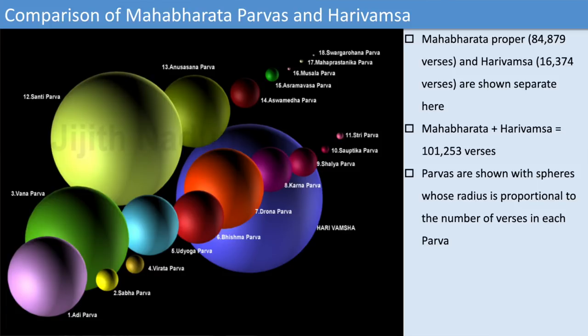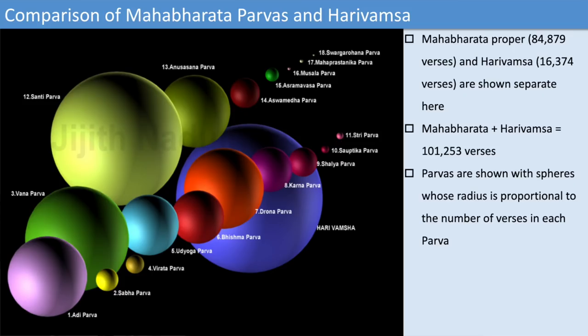This is a comparison of Mahabharata parvas. You can see the Shanti Parva represented as a very big sphere. Some parvas are very big — much bigger than the Ramayana — while others are very small. This visual gives a pictorial representation of Mahabharata in terms of number of verses. The blue color is Harivamsa, the appendix of Mahabharata, which is included as part of Mahabharata, making the total more than 100,000 verses.